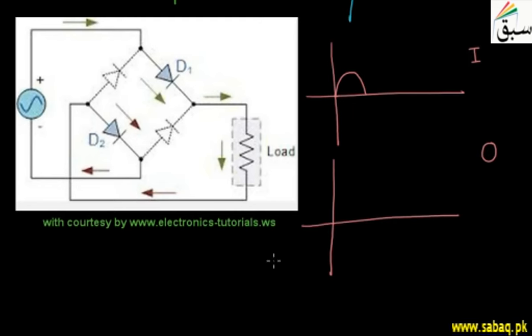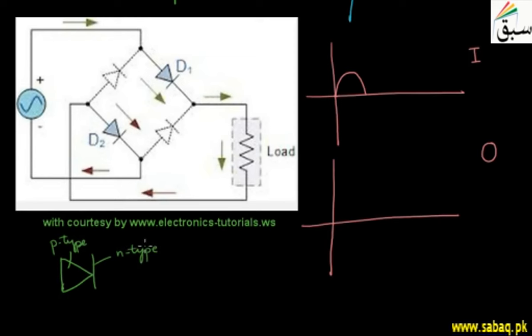First, we have a diode symbol: an arrow and a line. The arrow shows us that this is the diode's P-type region — where we have holes. The line shows us the N-type region — where we have electrons. So if this P-N junction semiconductor diode is connected to a battery such that the P-type region is attached to the positive terminal and the N-type region is attached to the negative terminal, this arrangement is called Forward Biasing, and current flows fully through the diode.